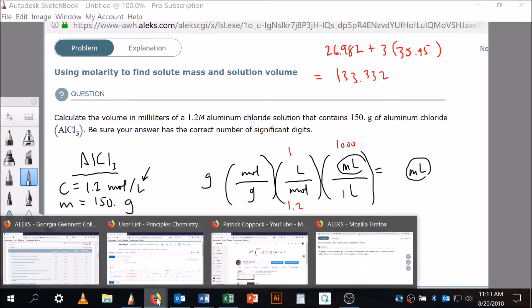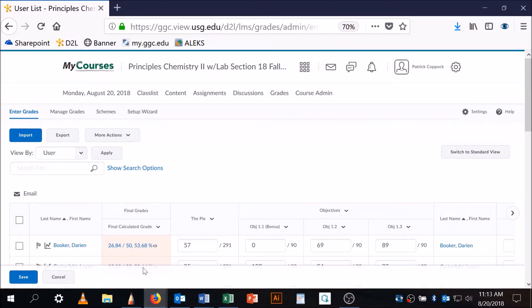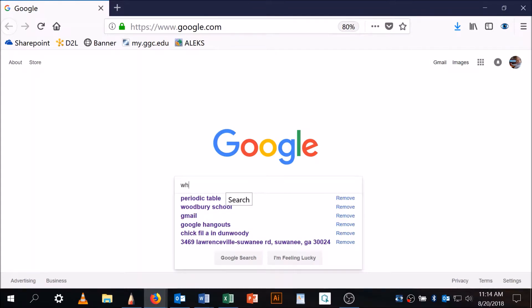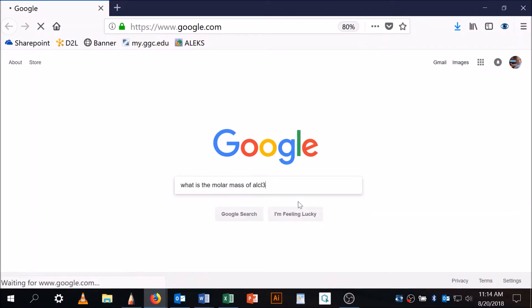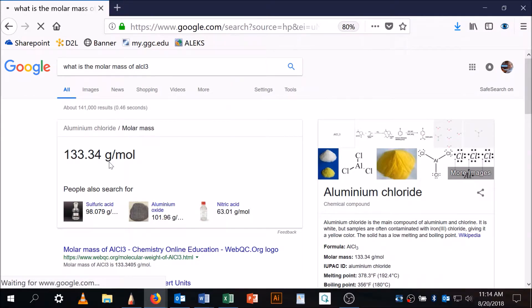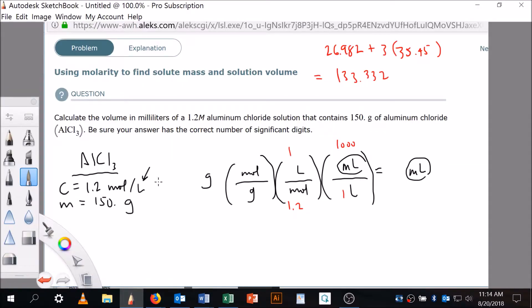What is the molar mass of AlCl₃? 133 point... I got 133.3324, about the same. Let me get rid of that, come back here.